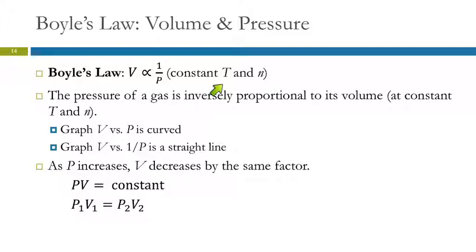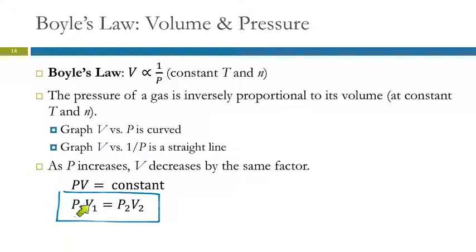We're assuming we're keeping the same temperature and the same amount of gas. We can express Boyle's Law in the useful form P₁V₁ = P₂V₂. What it's saying is that pressure times volume is a constant for that sample — as long as temperature and amount of gas are the same, pressure times volume will always equal the same number, regardless of what conditions we compare.